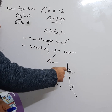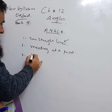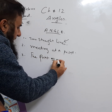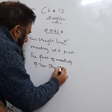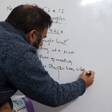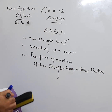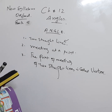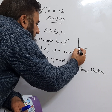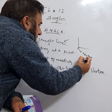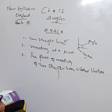The second condition is that they must be meeting at a single point — then this is called an angle. The point where two straight lines meet is called the vertex. So if this is a straight line and this is a straight line, they are meeting at this point — let's say point O. This point O is called the vertex, and this is the angle formed.